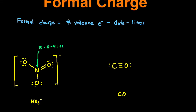Next let's take a look at this oxygen. The number of valence electrons of oxygen is six, minus the number of dots — you can see one, two, three, four dots — minus the number of lines: one, two. That's going to give you a formal charge of zero.